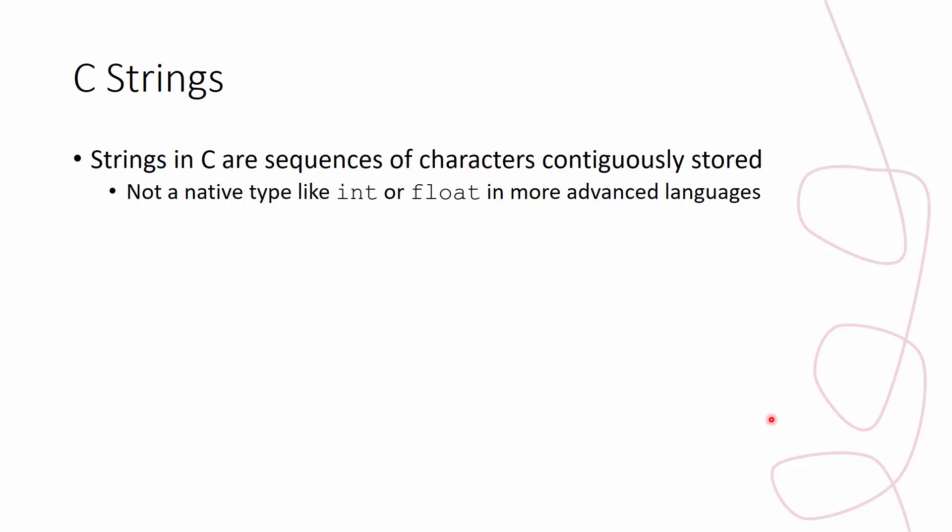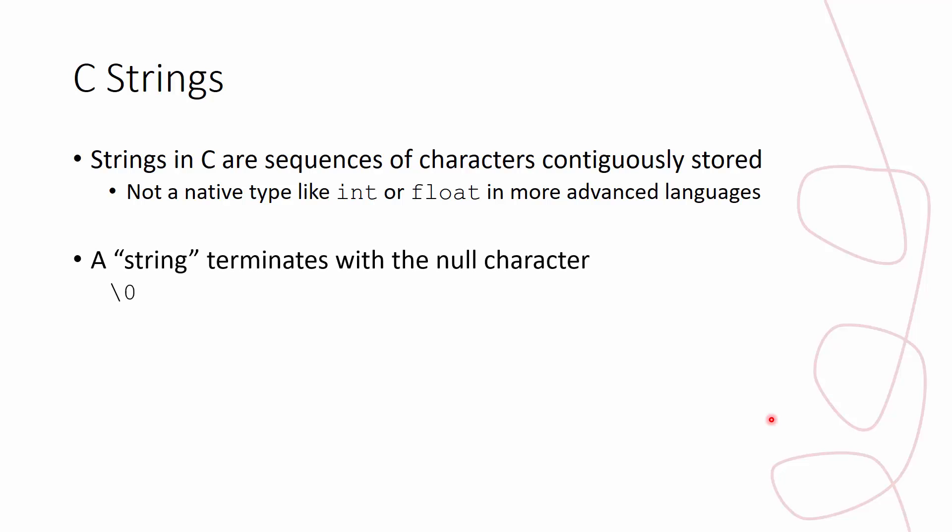In the C language, a string is a sequence of characters that happen to be contiguously stored. It's not a native type, like some sort of int or float that we're used to. In more advanced and newer languages, string becomes its own type — certainly in Java, and we can have a C++ string from the STL. We can have all kinds of different formal types for these strings. But in C, that's not the case. They just happen to be sequences of characters.